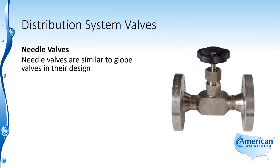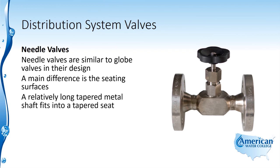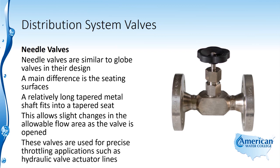Needle valves are similar to globe valves in their design. The main difference is the seating surfaces — a relatively long tapered metal shaft fits into a tapered seat, which allows slight changes in the allowable flow area as the valve is opened. These valves are used for precise throttling applications such as hydraulic valve actuator lines.